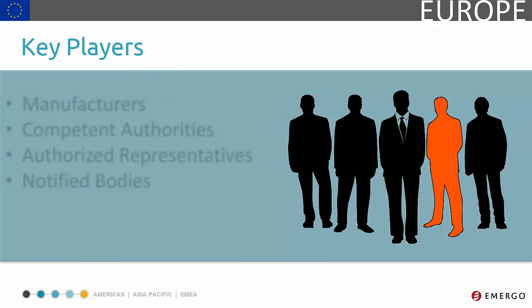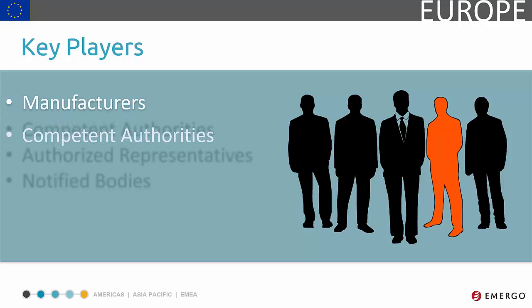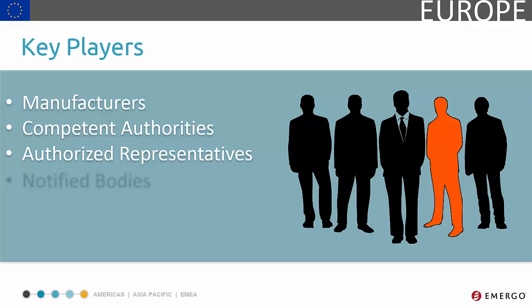Although there are many parties involved in the regulatory process, we're going to focus on these primary entities: manufacturers, competent authorities, authorized representatives, and notified bodies.